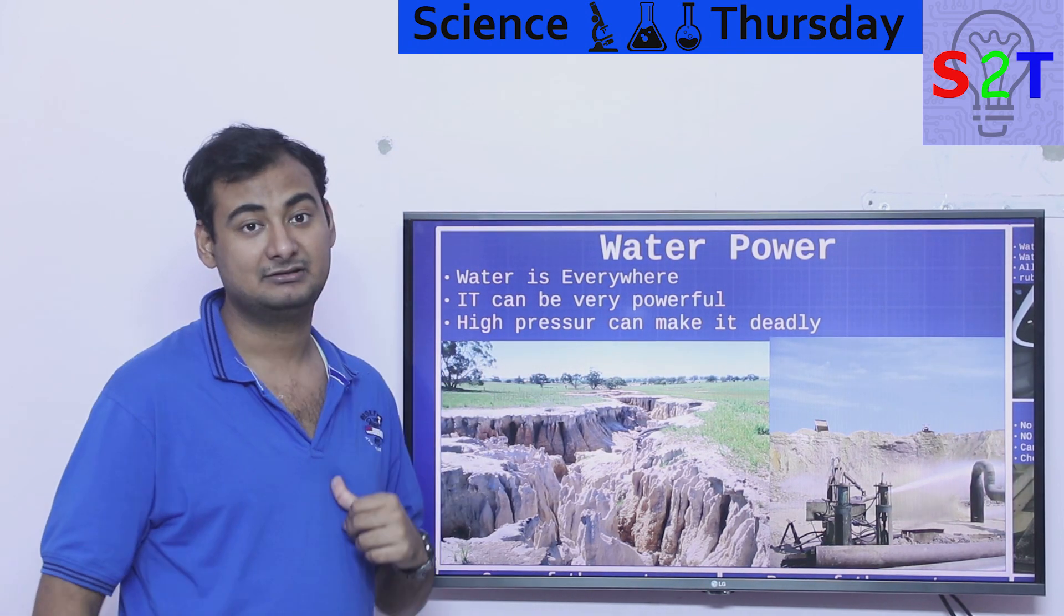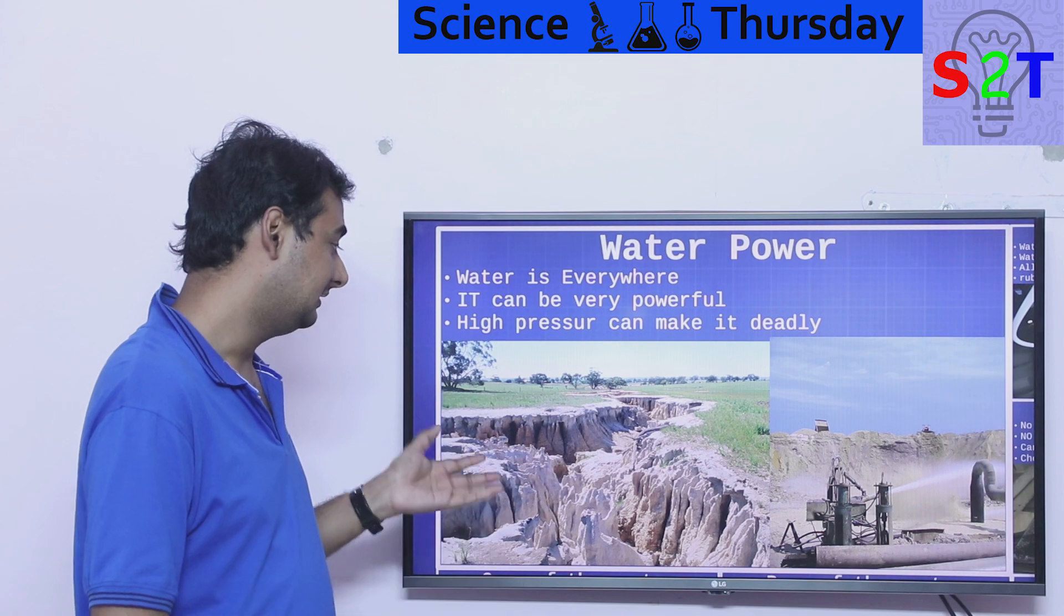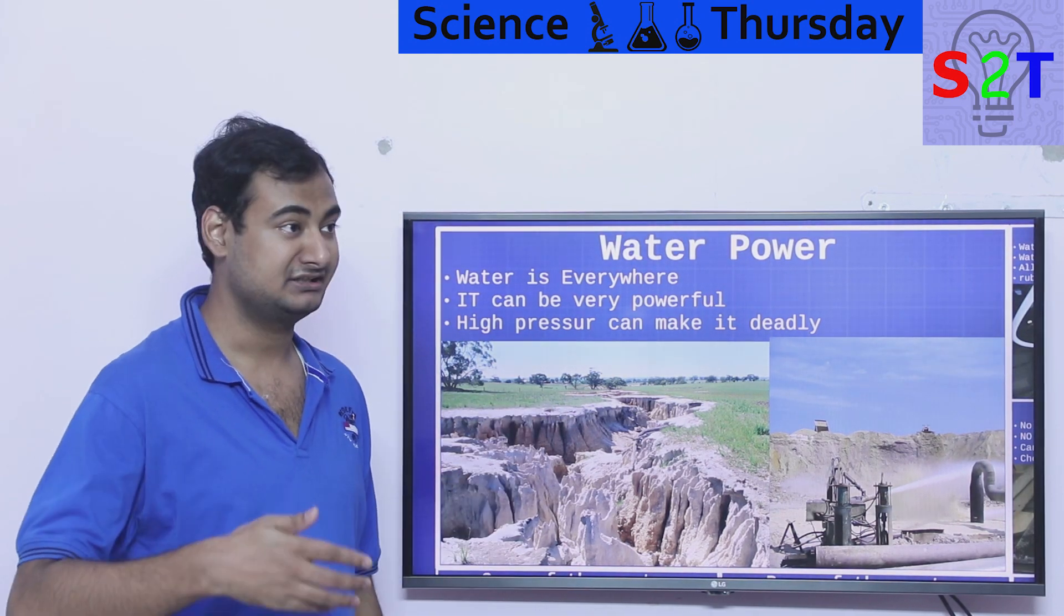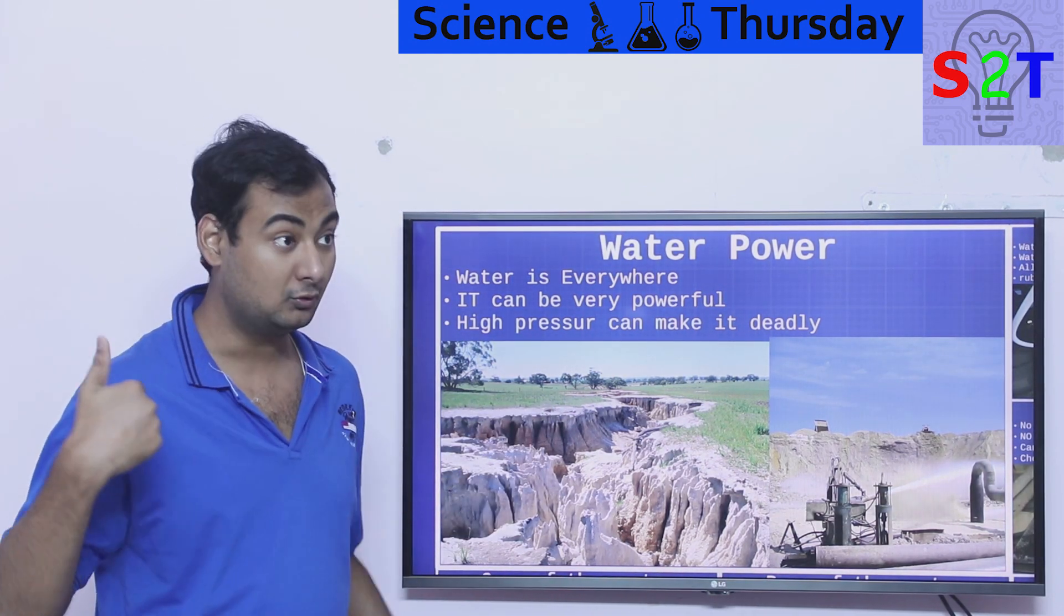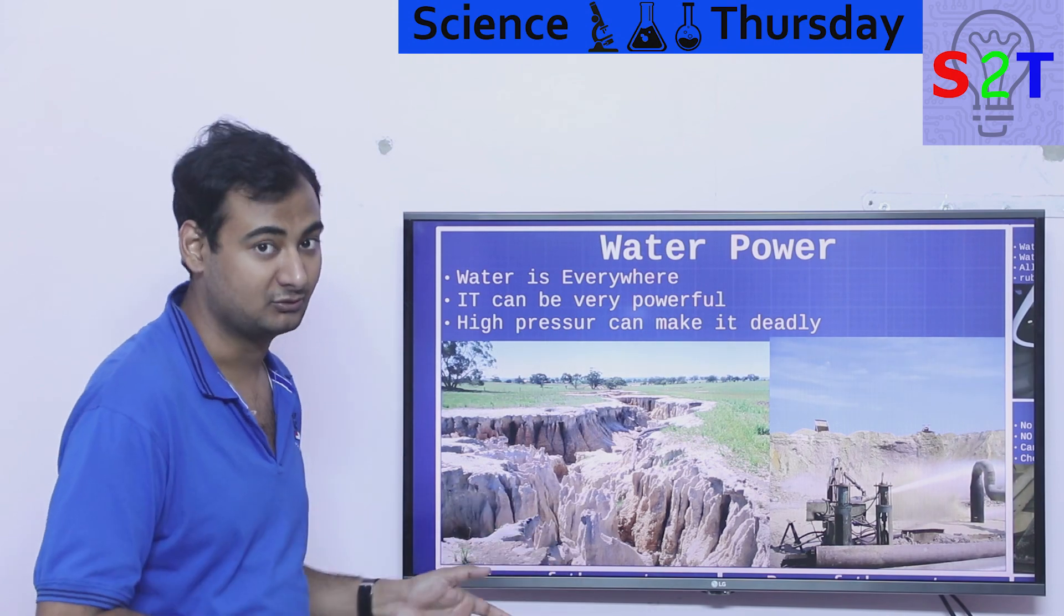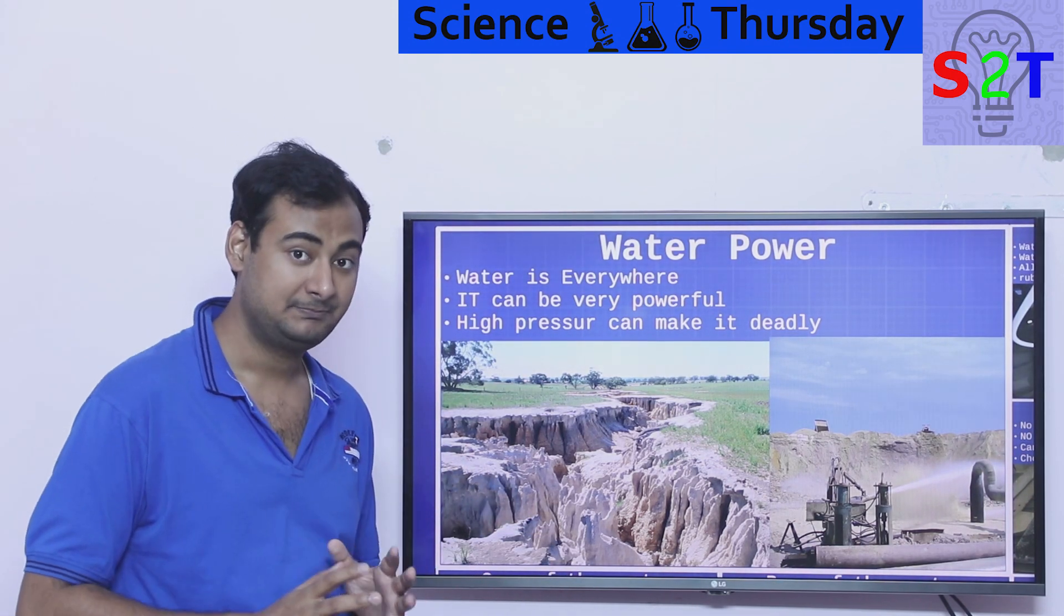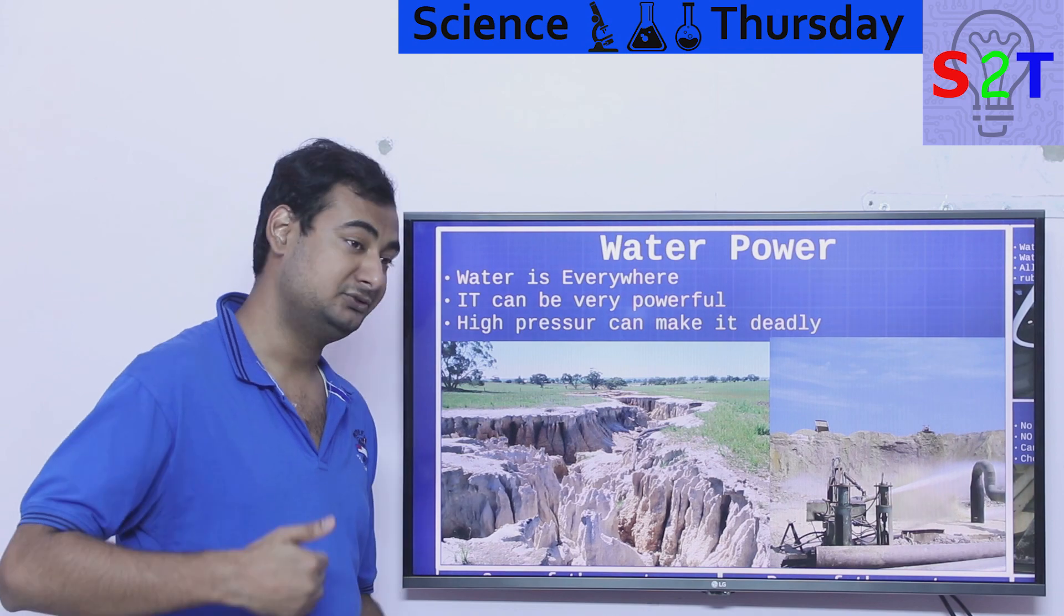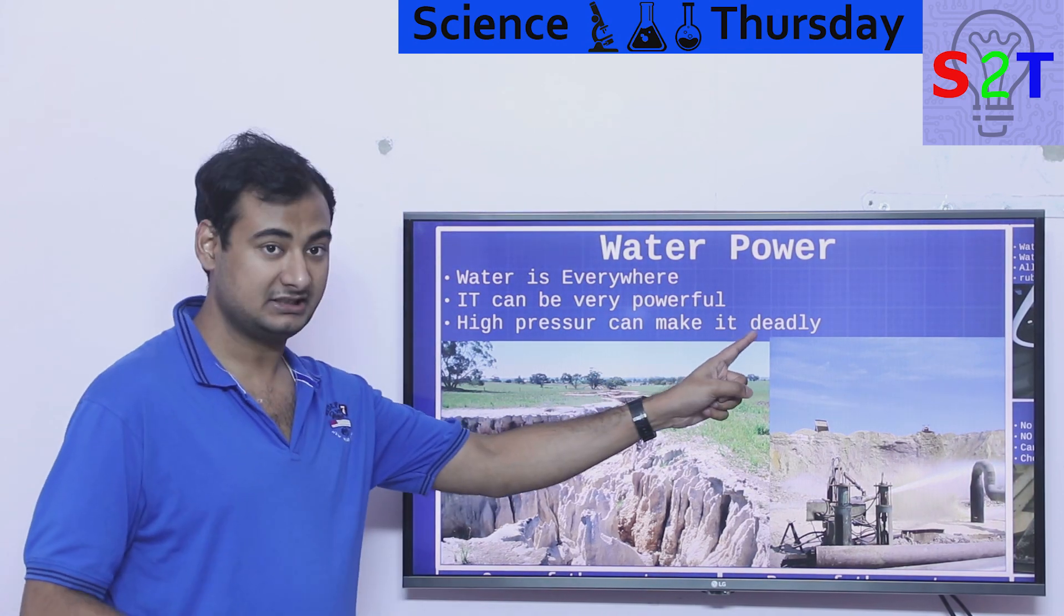On top of that, it is very powerful in its natural state. Like you can see it can erode mountains or roads, a whole village, a whole town, or even a city if it wants to. So you have to understand water is very powerful. Now if you take that water and you pressurize it, then it becomes deadly.